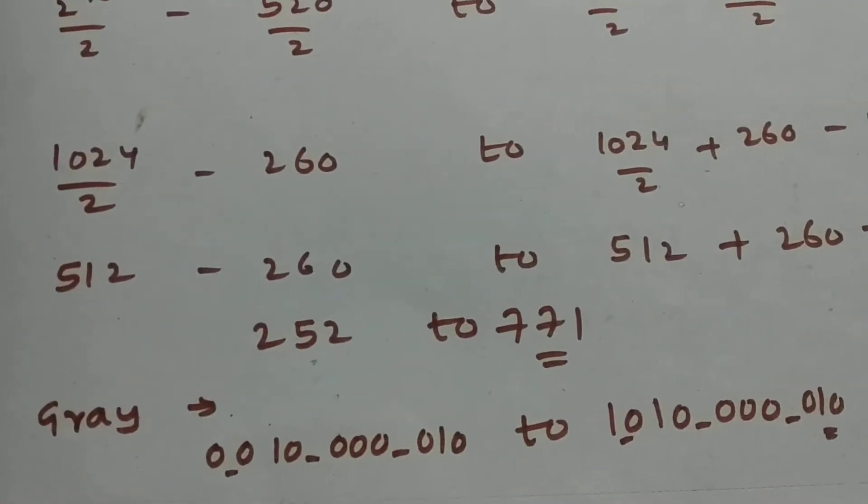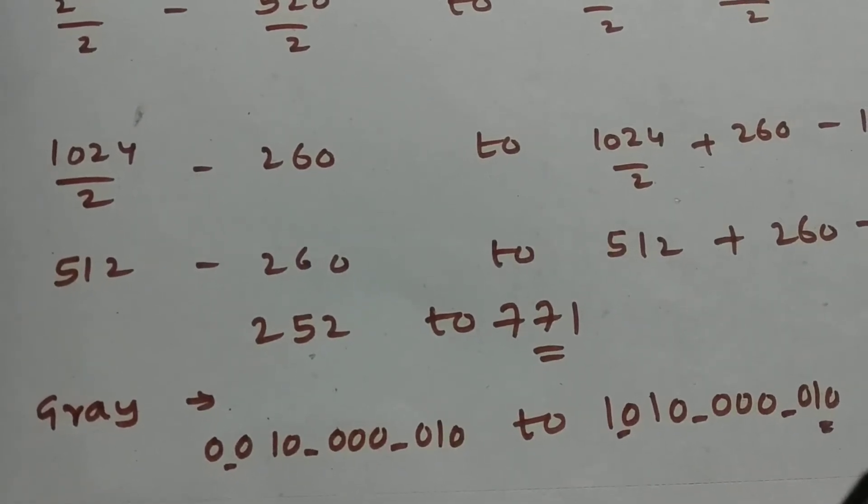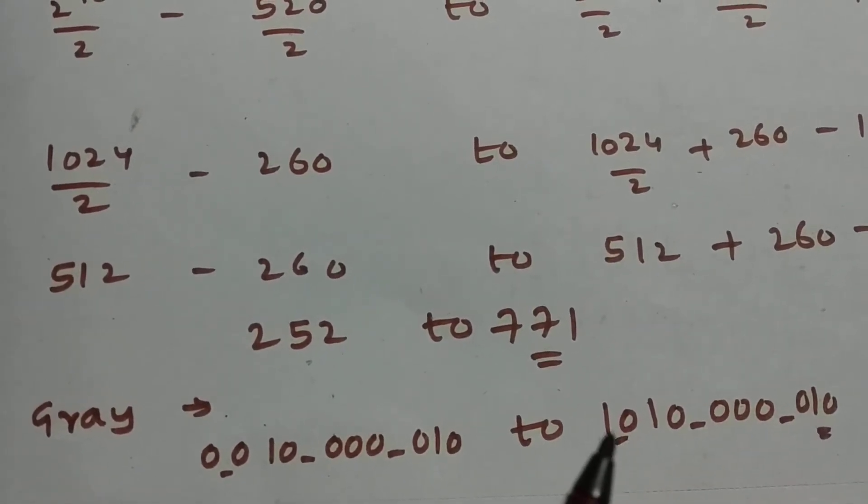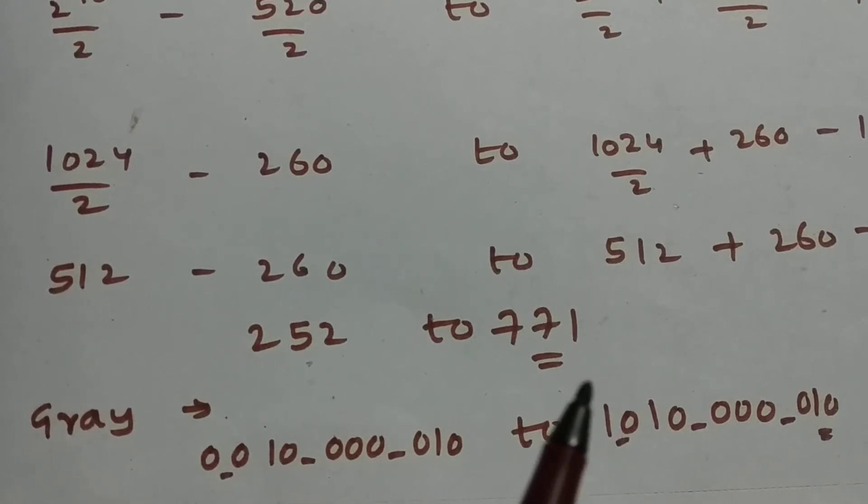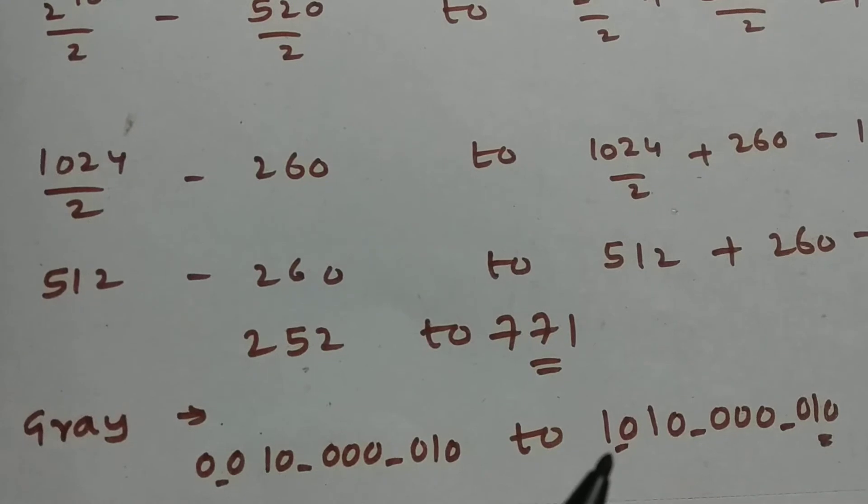As you can see, the two numbers are only differing by one digit, that's one binary one. Only one number is changing. Only that last MSB value is changing.